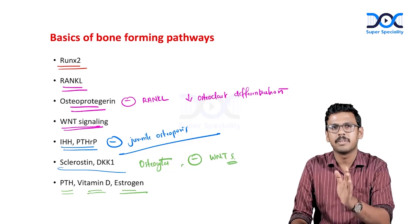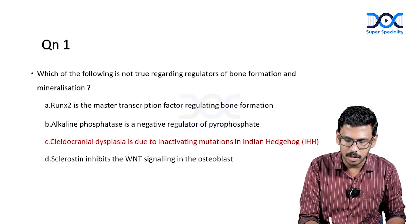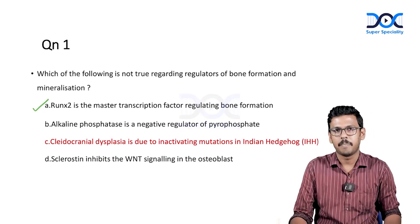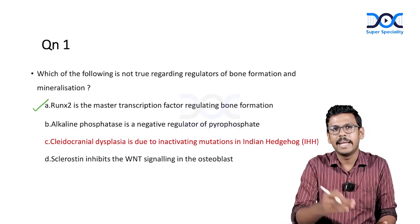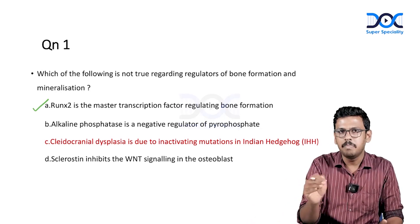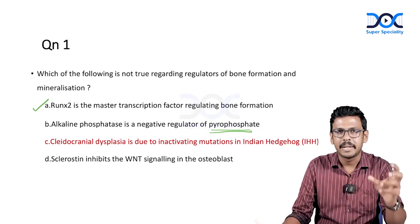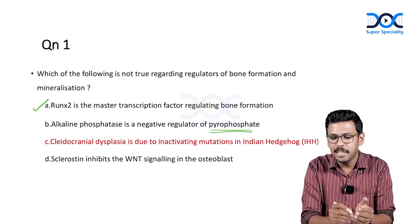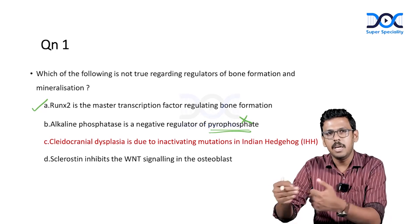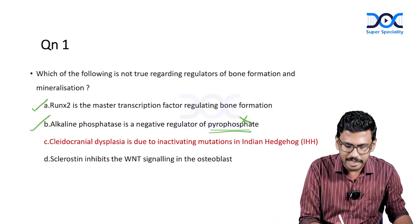Coming to the answer for question one: RUNX2 as the master transcription factor regulating bone formation is a true statement. Alkaline phosphatase being a negative regulator of pyrophosphate is also true — when osteoblasts lay down osteoid, it must be mineralized with calcium hydroxyapatite crystals. Pyrophosphate inhibits mineralization, and alkaline phosphatase cleaves pyrophosphate, lifting that inhibition. Sclerostin inhibiting WNT signaling is also true.